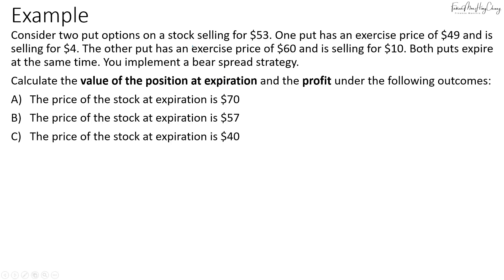Consider two put options on a stock selling for $53. One put has an exercise price of $49 and is selling for $4. The other put has an exercise price of $60 and is selling for $10. Both puts expire at the same time and you implement a bear spread strategy. Calculate the value of the position at expiration and the profit under the following outcomes: if the price of the stock at expiration is $70, $57, and $40.